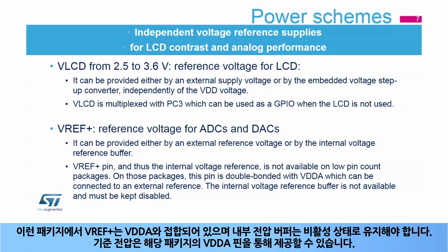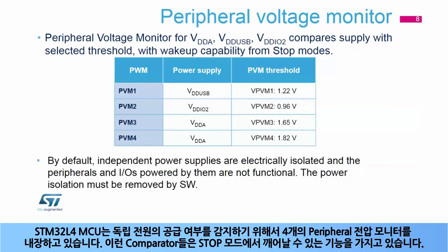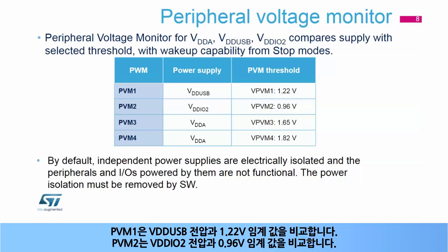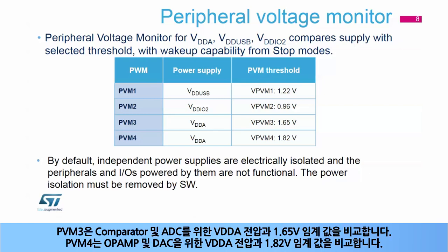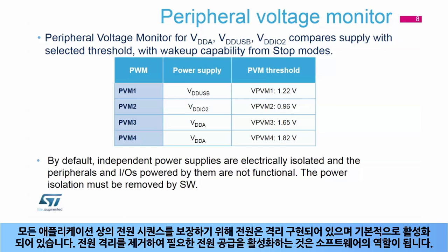The STM32L4 MCU embeds four peripheral voltage monitors to detect if the independent supply is present. These comparators have wake-up-from-stop mode capability. PVM1 compares the VDD-USB voltage with the 1.22 volt threshold. PVM2 compares the VDD-IO2 voltage with the 0.96 volt threshold. PVM3 compares the VDDA voltage with the 1.65 volt threshold intended for comparators and ADCs. PVM4 compares the VDDA voltage with the 1.82 volt threshold intended for op-amps and DACs. To guarantee supply sequence on the application, power isolation is implemented and active by default; software enables the needed supplies by removing the power isolation.